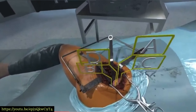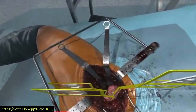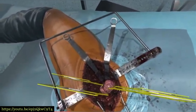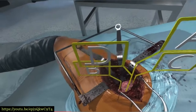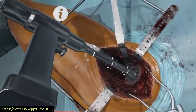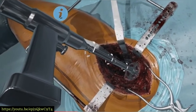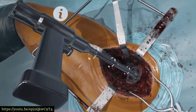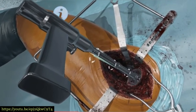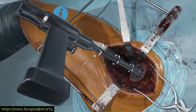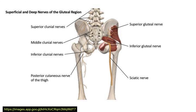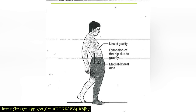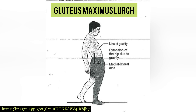This can damage the nerve either through direct trauma from sharp dissection, devascularization, or stretching of the nerve from instrumentation. This will then result in denervation of the ipsilateral gluteus maximus muscle, causing a gluteus maximus lurch.